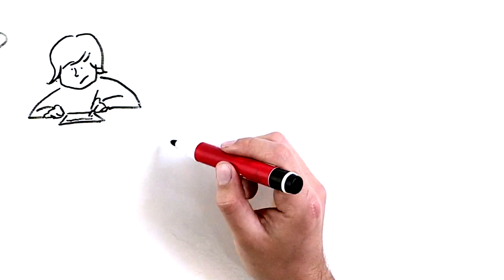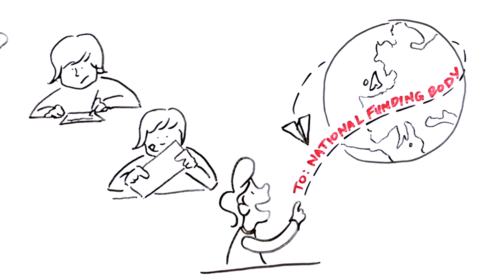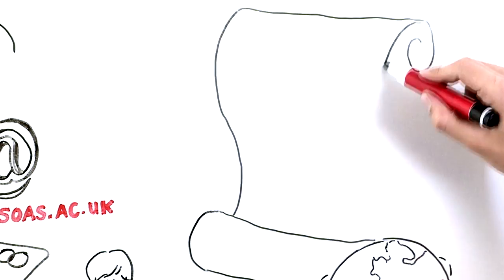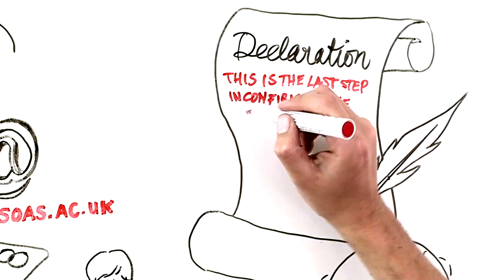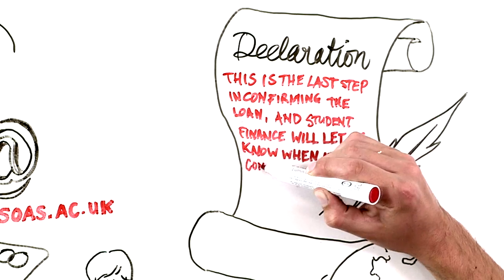If you're eligible for an undergraduate student loan or other funding, you should apply as soon as possible to your national funding body. Don't forget to return your signed declaration form. This is the last step in confirming the loan, and Student Finance will let us know when it is complete.